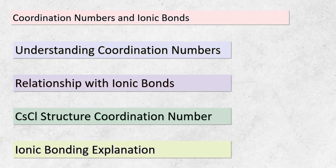Let's dive deeper into coordination numbers and how they relate to the bonding in ionic structures. Coordination number simply tells us how many neighboring ions surround a central ion. In the caesium chloride structure, each cation/anion is encircled by eight ions of the opposite kind. Ionic bonds are formed due to the electrostatic attraction between positively charged cations and negatively charged anions — this strong attraction holds the structure together. In the caesium chloride structure, this bond forms due to the arrangement where each ion is surrounded by eight ions of opposite charge, providing stability to the crystal lattice.